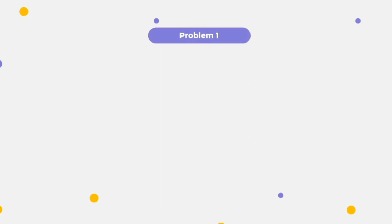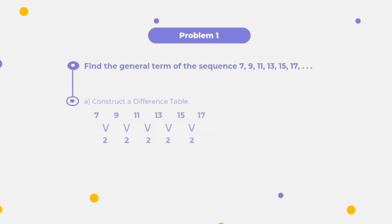Problem number one: find the general term of the sequence 7, 9, 11, 13, 15, 17, and so on. First, we construct a difference table. The first set of differences: 9 minus 7 equals 2, 11 minus 9 equals 2, 13 minus 11 equals 2, 15 minus 13 equals 2, and 17 minus 15 equals 2. Since the constant row is found in the first difference, we will use the linear equation formula a(n) equals mn plus b.